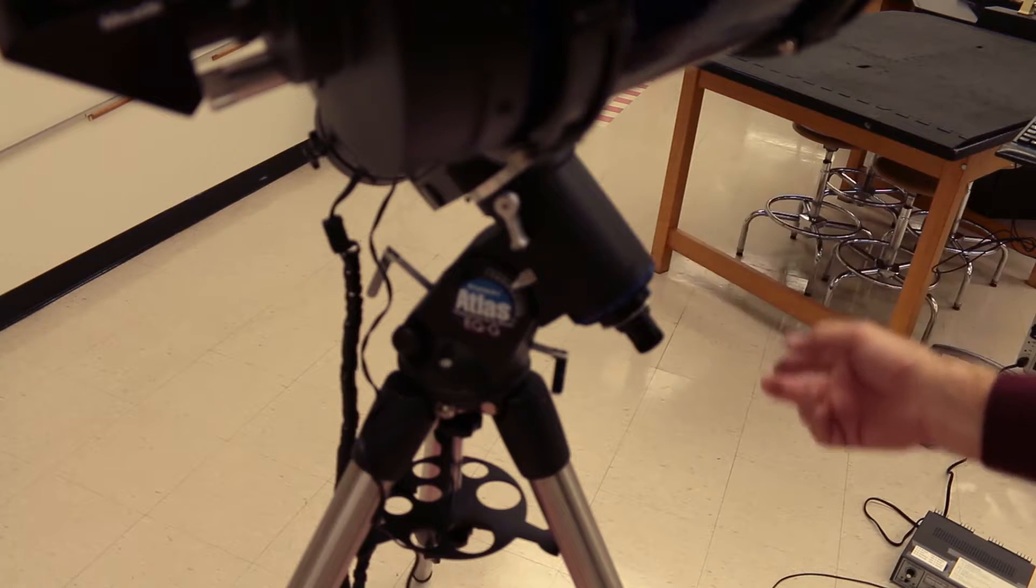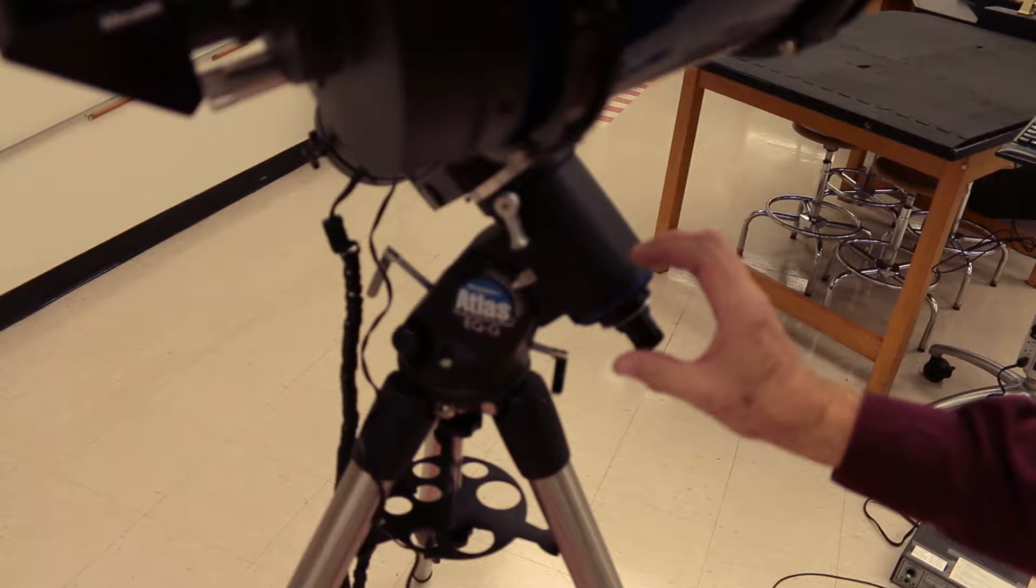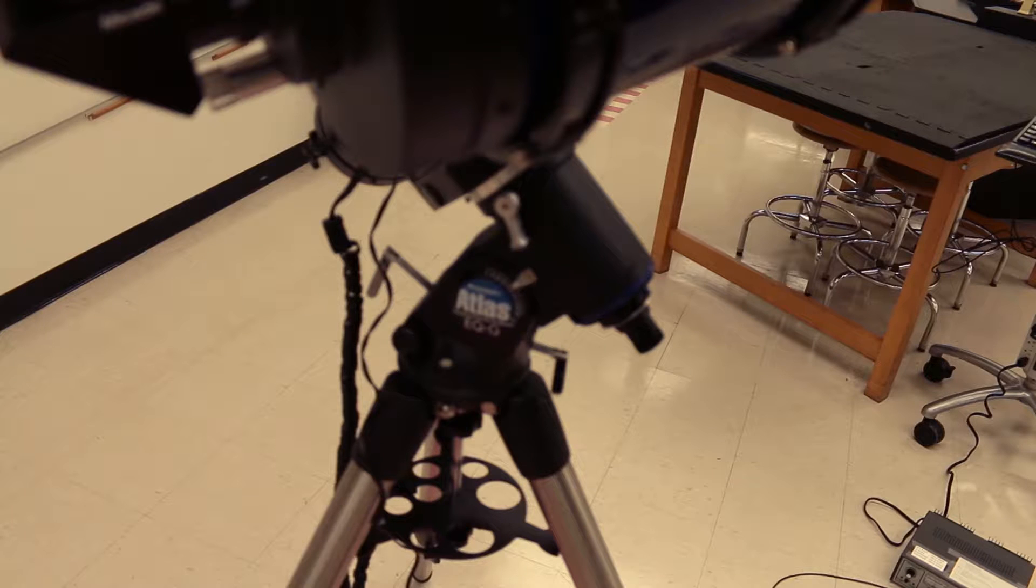So this axis right here is parallel to the Earth's rotational axis. When I plug this thing in and turn it on, the telescope turns in precisely the opposite direction that the Earth is turning. So the stars seem to track. They seem to be stationary in the telescope.